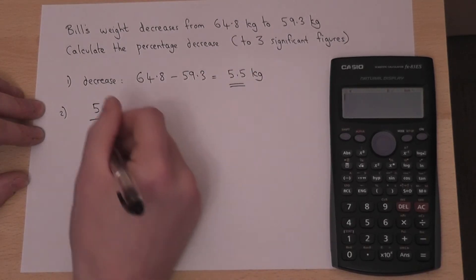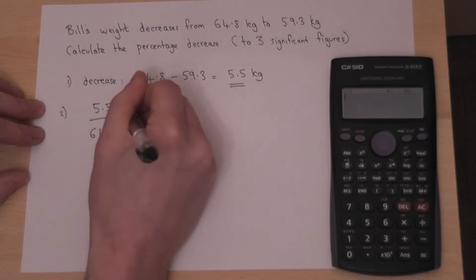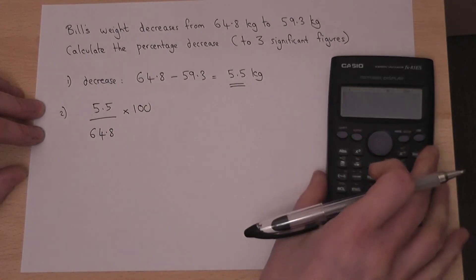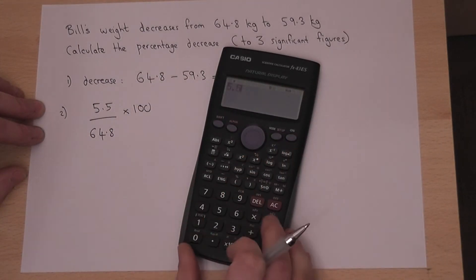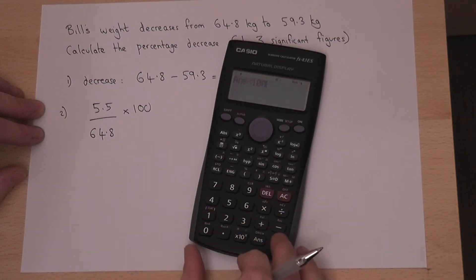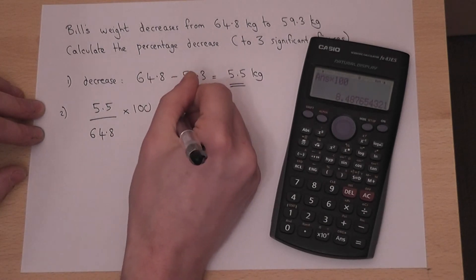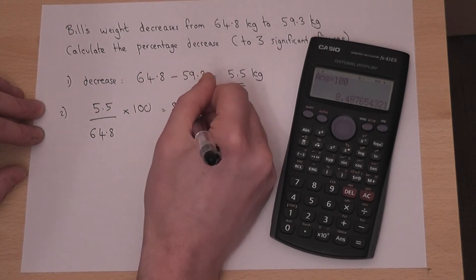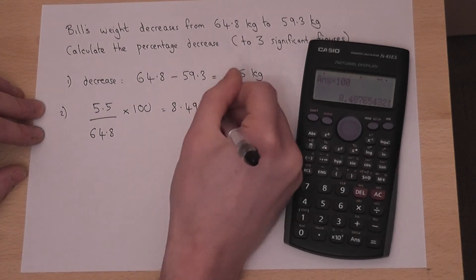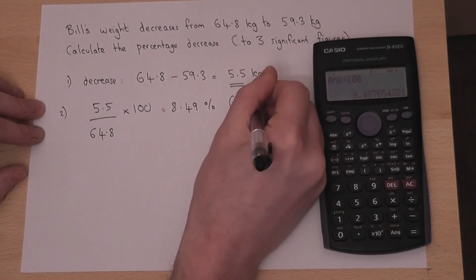So we do 5.5 over 64.8 times by 100. So 5.5 divided by 64.8 times by 100. Press the S to D button and we get 8.49% to 3 significant figures.